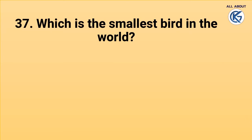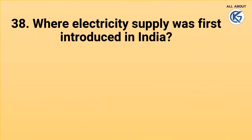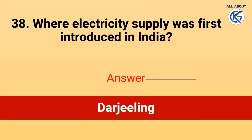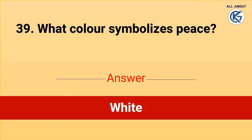Which is the smallest bird in the world? Hummingbirds. Where was electricity supply first introduced in India? Darjeeling. What color symbolizes peace? White.